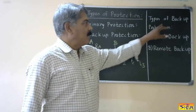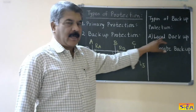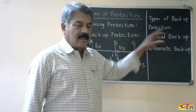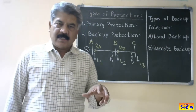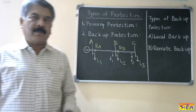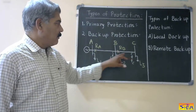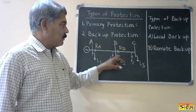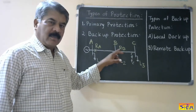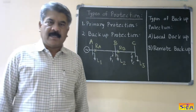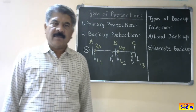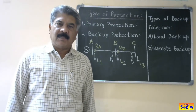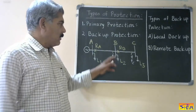Now let us see the types of backup protection. There are two types: one is local backup, and the second is remote backup. Local backup means it is provided at the same place where the primary protection is located. It can be provided by a duplicating principle — either using two different relays or two different circuit breakers, or duplicating the entire protection system at that point.